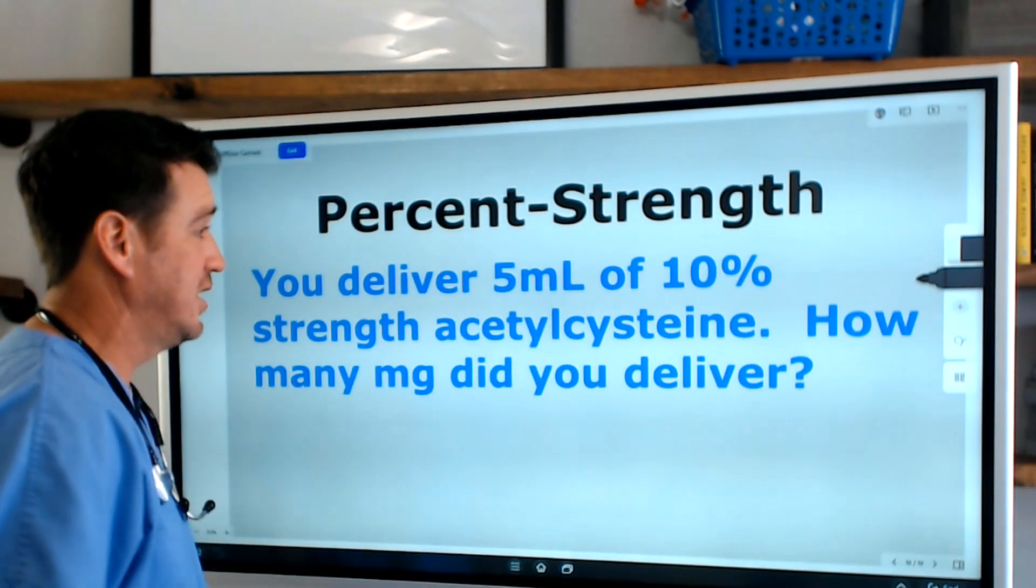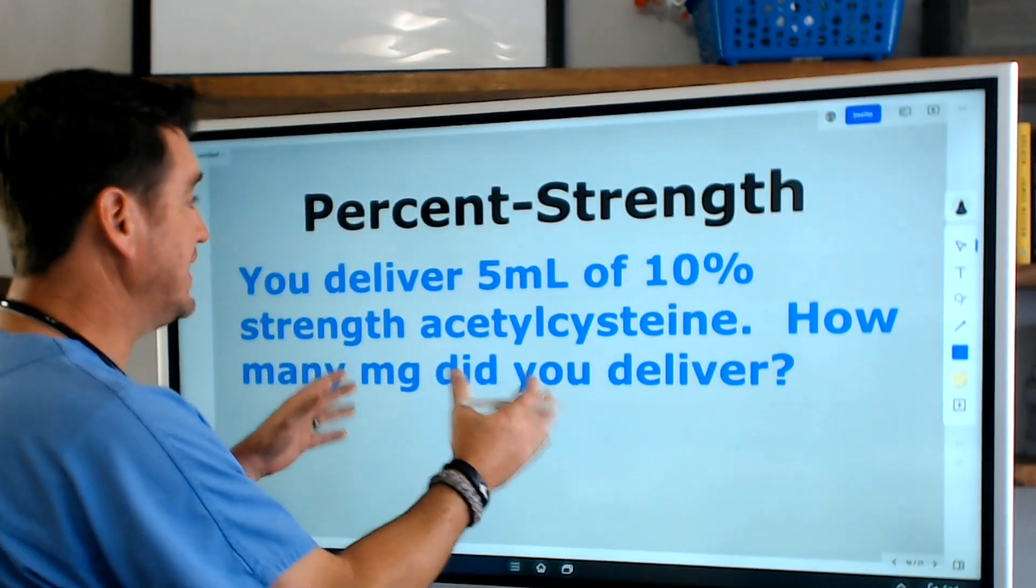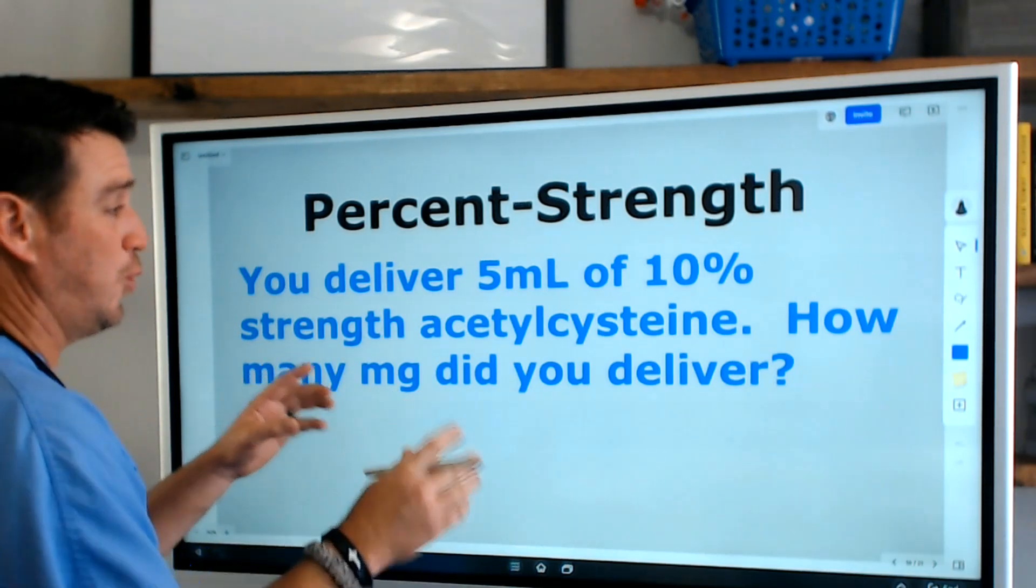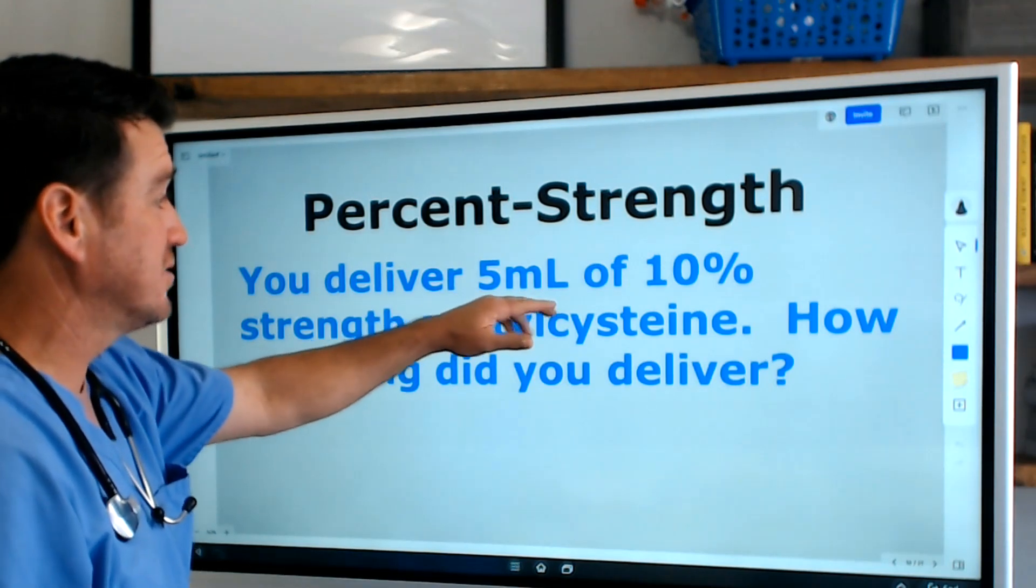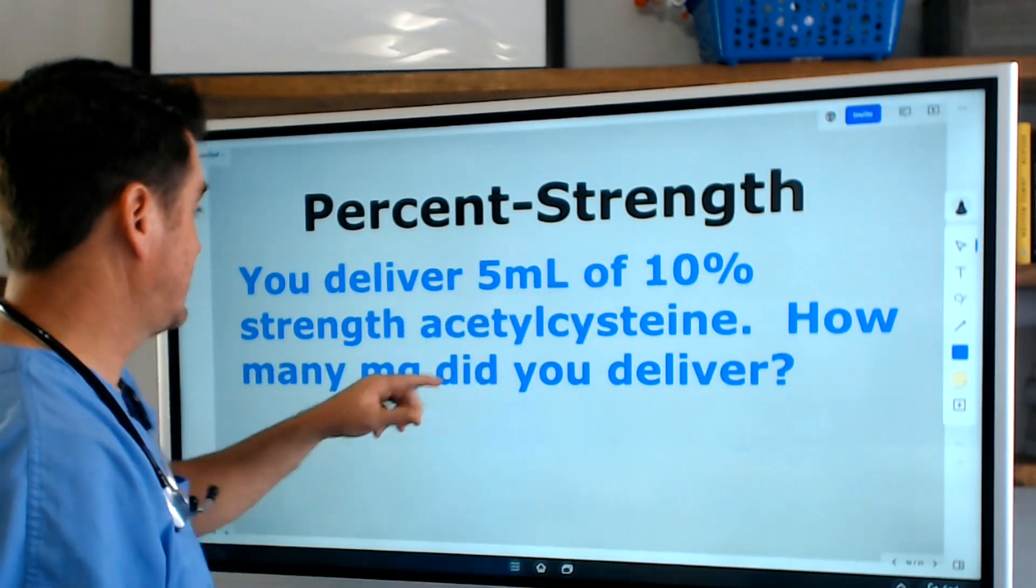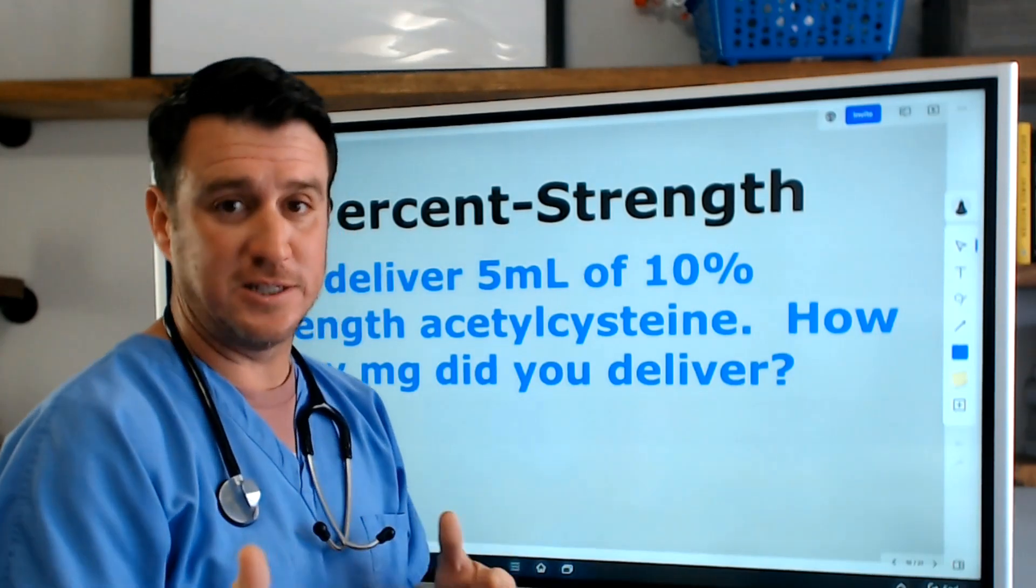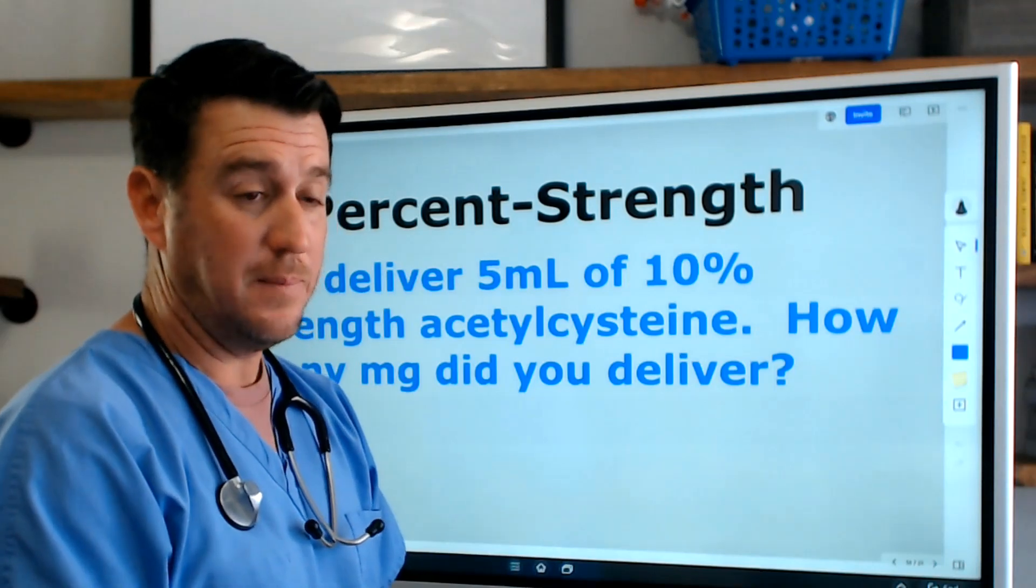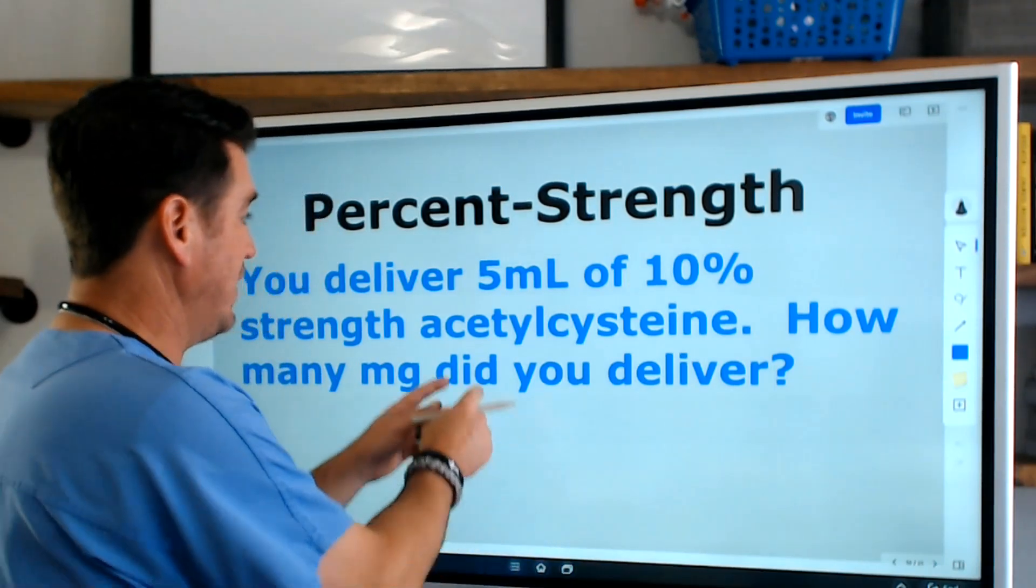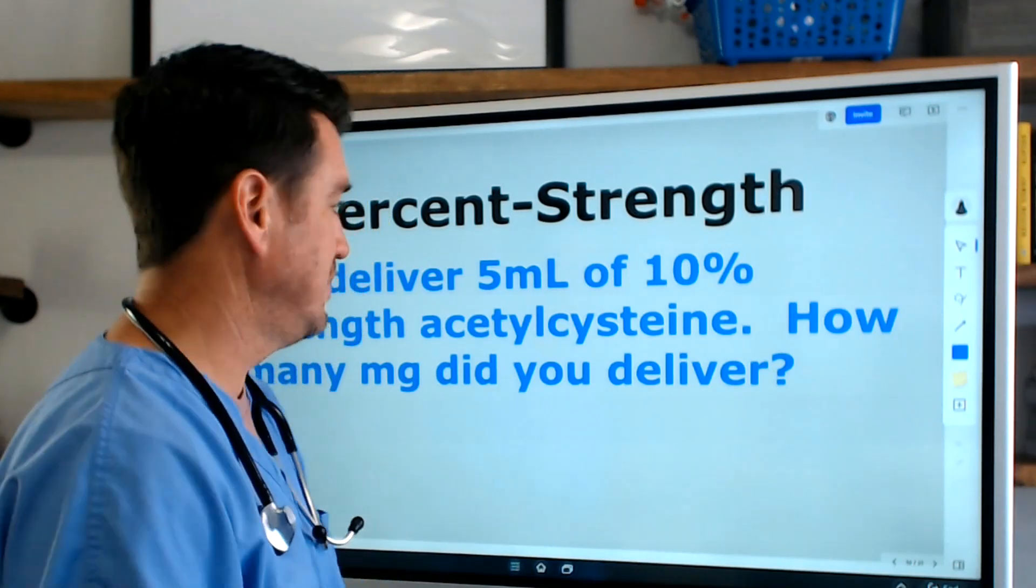When we look at this example, we see that the question changes a little bit. This question says you deliver 5 milliliters of 10 percent strength acetylcysteine. Now wait a second, what is acetylcysteine? Pause this video. Think about it.